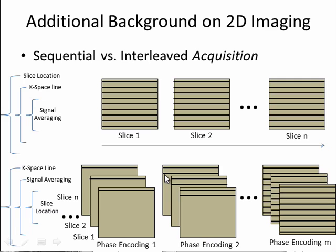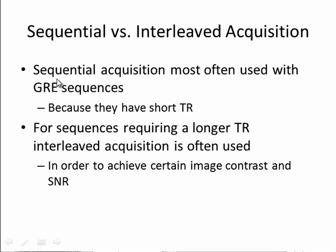Then we go to the next slice, do any averaging on that line. Then the outer loop — we move to the next phase encoding line, which would be the third line, and so on until we acquire all of our lines. You can see that the acquisition order is quite different between these two methods. Certain pulse sequences are more suited for sequential, and certain sequences are more suited for the interleaved type. Gradient echo sequences are good candidates for sequential acquisition because they have a short TR, while sequences that need a longer TR are good candidates for interleaved acquisition so that you can achieve a certain image contrast and signal-to-noise ratio.